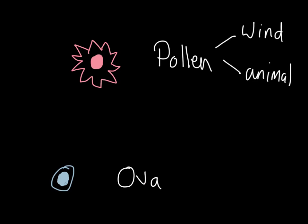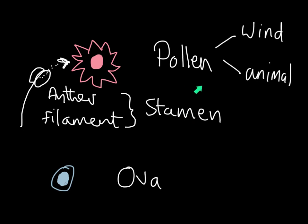In plants, a big focus is on how the pollen is transferred from the male part. The male part, which is called the stamen, is made up of a filament — which is the stick bit — and an anther, which is the two round bits at the top, and they contain the pollen. Here it is coming out.